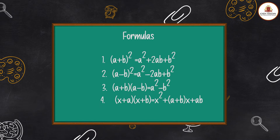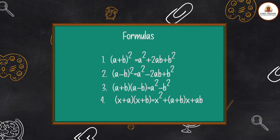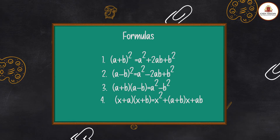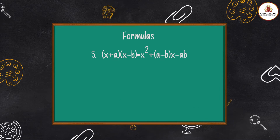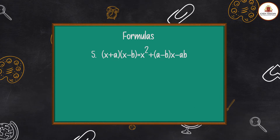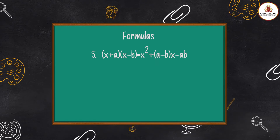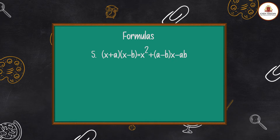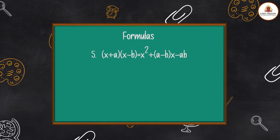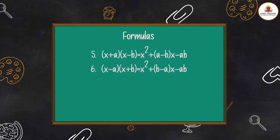4. (x + a)(x + b) = x² + (a + b)x + ab  5. (x + a)(x − b) = x² + (a − b)x − ab